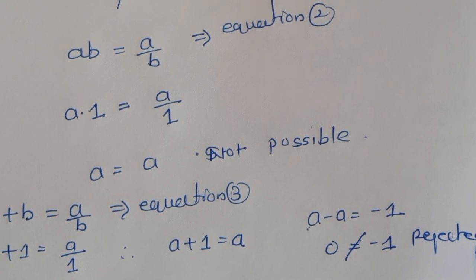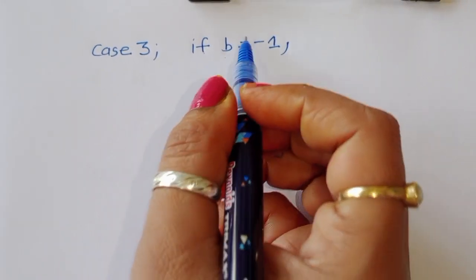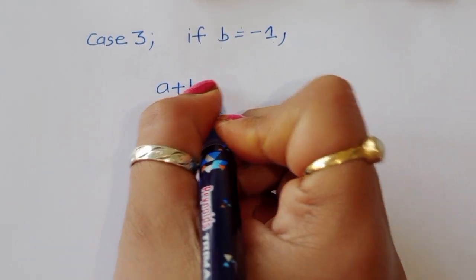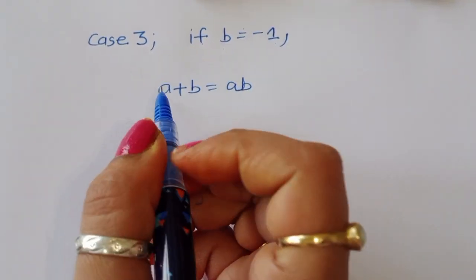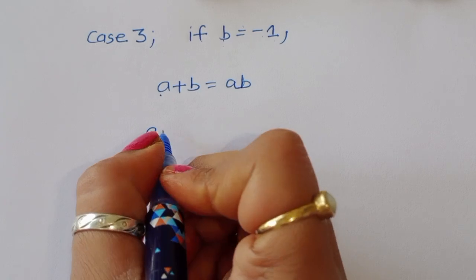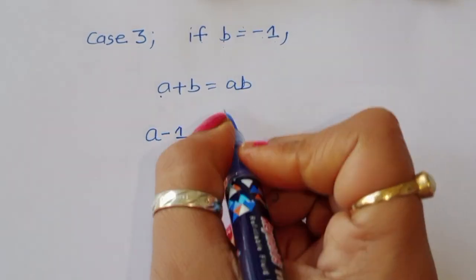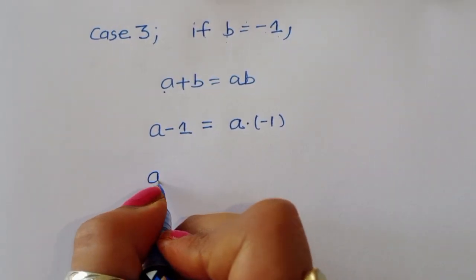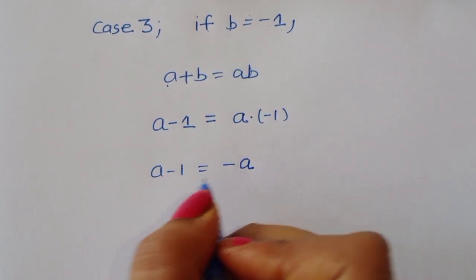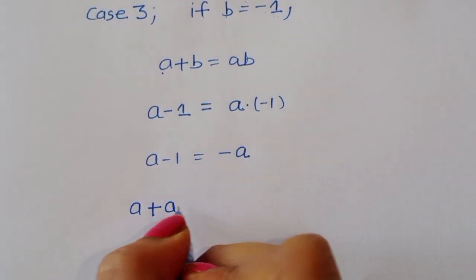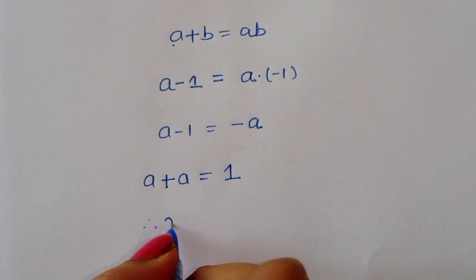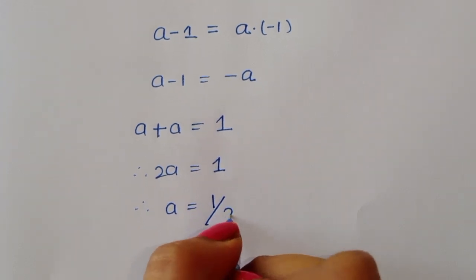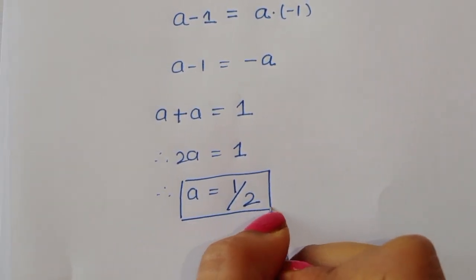Case 3, b = -1: From equation 1, a + (-1) = a·(-1), so a - 1 = -a. Therefore a + a = 1, giving 2a = 1, so a = 1/2.